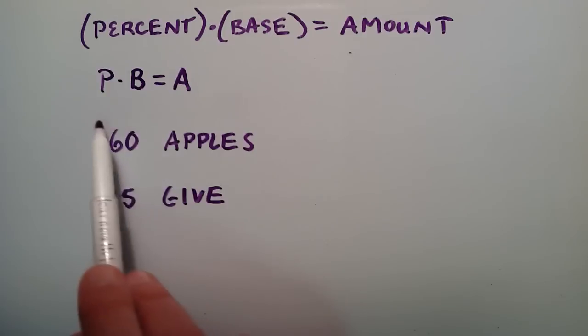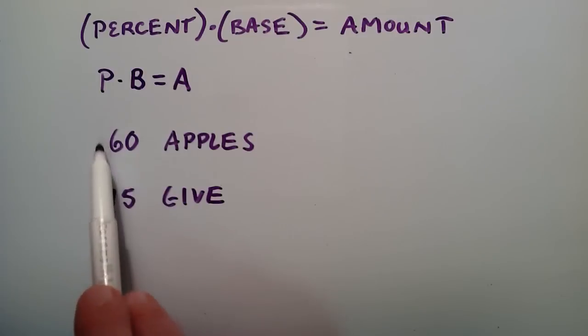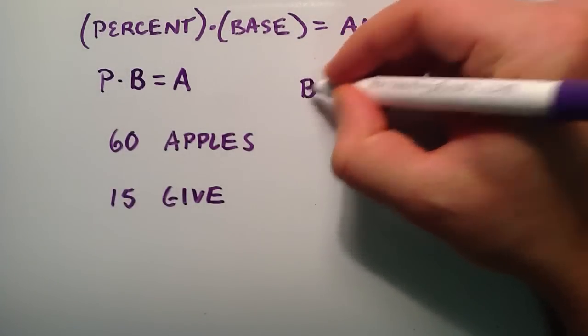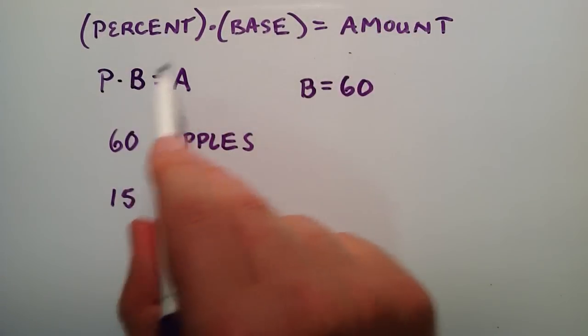So since the items that we started with is going to be apples, we have 60 apples, then basically the start is the base. This is what we're starting with. So our base number, the number we start with, is 60. So B becomes 60, our base.